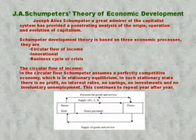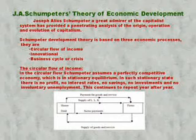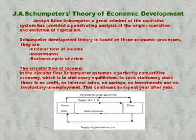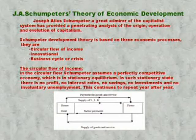There is no net addition that takes place to the national income, so every year it continues to repeat year after year. I have provided a chart to explain this concept — the circular flow of income. Money goes from the firm side to the household side for the services provided by the households.